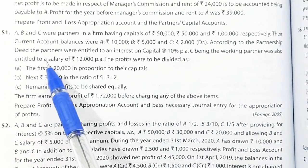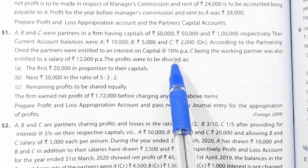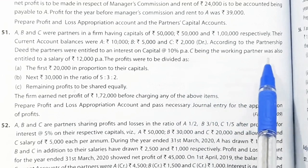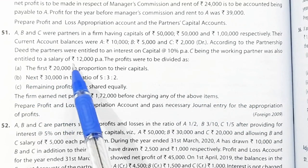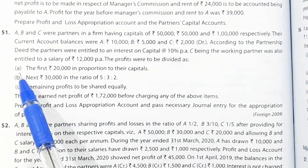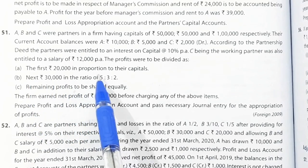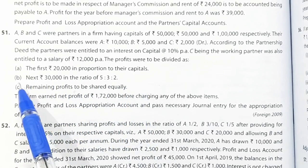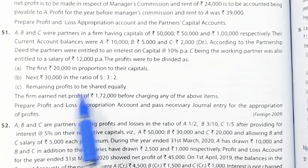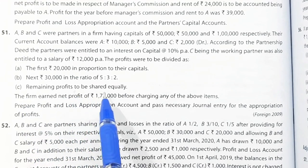According to the partnership deed, the partners were entitled to interest on capital at the rate of 10% per annum. C being the working partner was also entitled to a salary of Rs. 12,000 per annum. The profits were to be distributed as: first Rs. 20,000 in proportion of their capitals; next Rs. 30,000 in ratio of 5:3:2; and remaining profits to be shared equally.